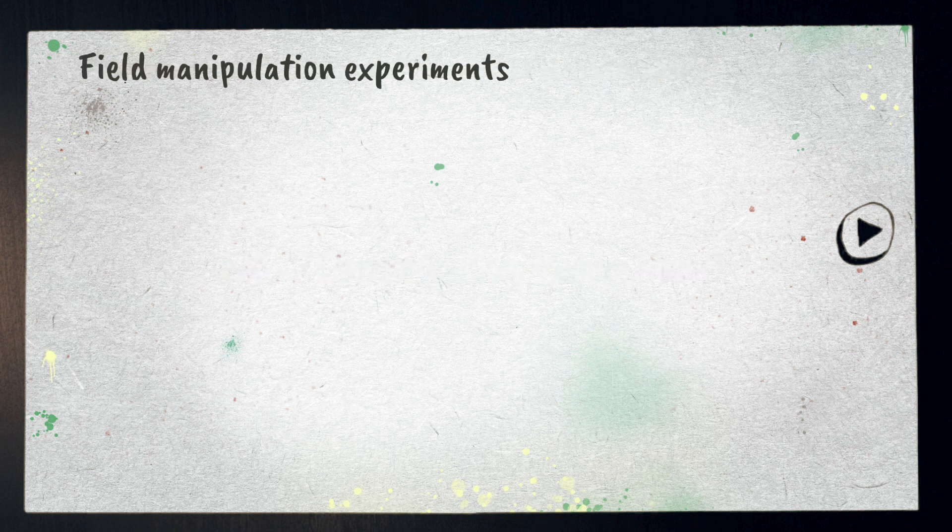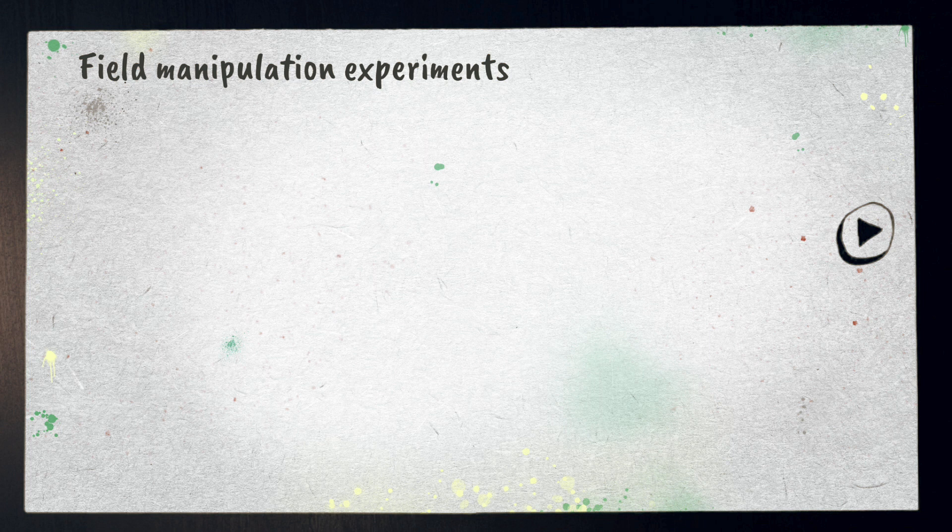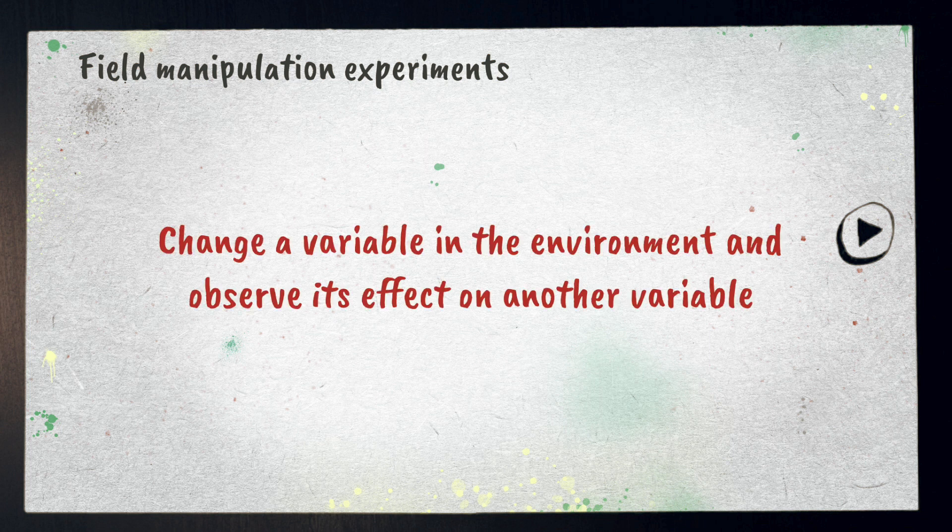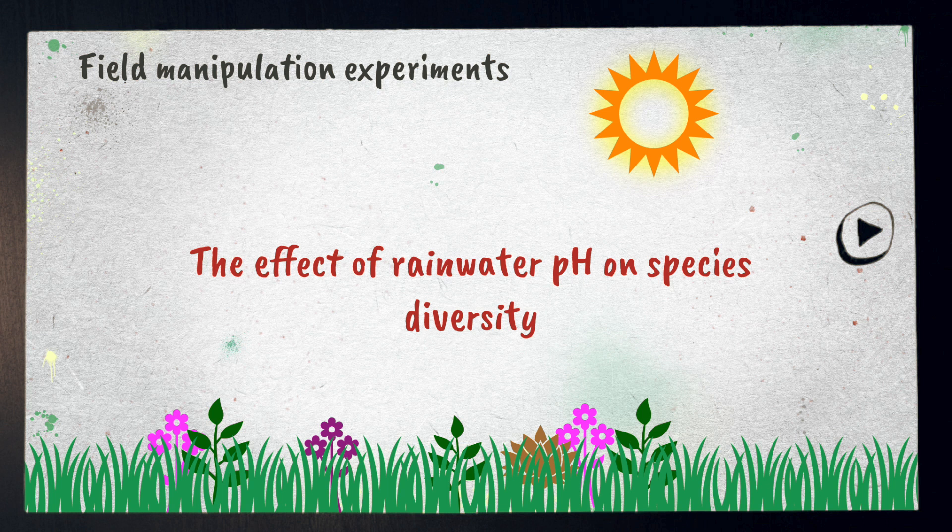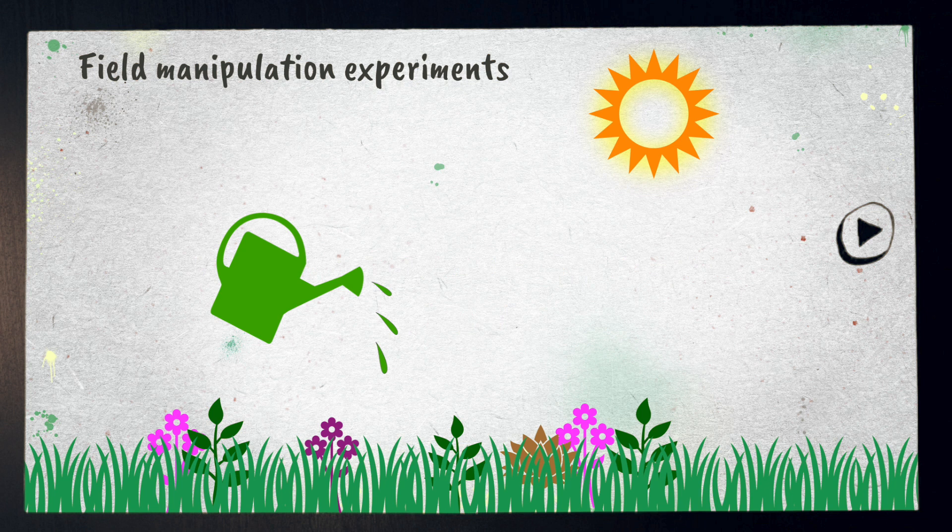Field manipulation experiments is an interesting option. This involves changing a variable in the environment and observing its effect on another variable. Maybe your research somehow involves investigating the effect of rainwater pH on species diversity. You could select different sections in the ecosystem and water them with water of differing pH values and observe any differences. Obviously that would take weeks before you could get your data so you'd have to plan ahead.